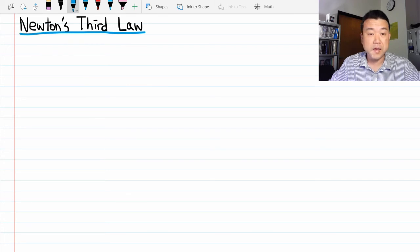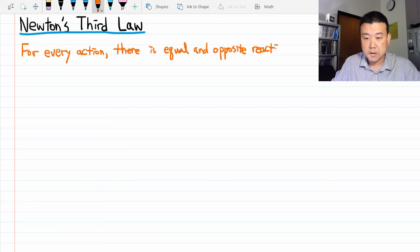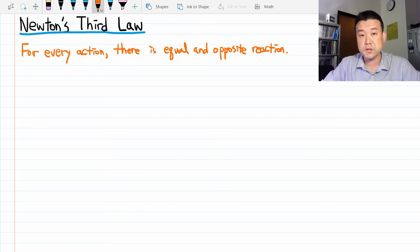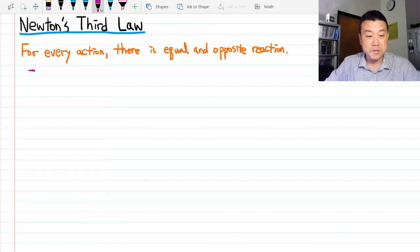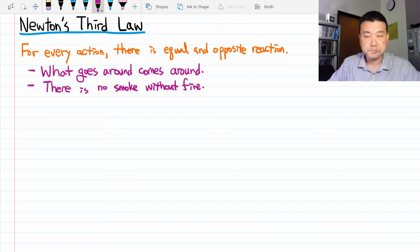But I think the version that most people have heard is more confusing than helpful. So this is the version that a lot of people have heard. For every reaction, there is equal and opposite reaction. And that's unfortunate because I think for most people, this statement actually causes more confusion than illumination. This is what I mean. Take these other statements that you may have heard elsewhere. What goes around comes around. Or maybe, there is no smoke without fire. Or just a phrase, cause and effect.